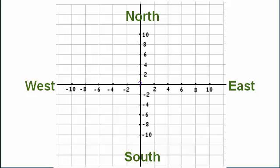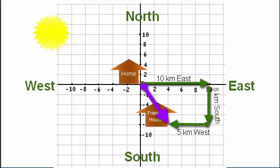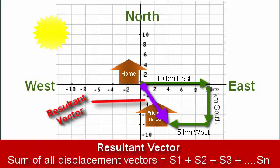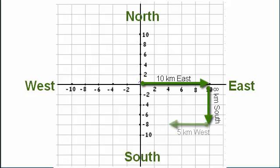What happens when you're dealing with more than two vectors? Let's say we're still taking a drive around our neighborhood, driving 10 kilometers east, 8 kilometers south, but instead of traveling 10 kilometers west, you decide to stop about halfway to visit your friend — so you're driving 5 kilometers west. The distance between your home where you started and your friend's home is what we call the resultant vector. The resultant vector is the sum of all displacement vectors. Whenever you're adding vectors, remember the head-to-tail method: the head of your previous vector is connected to the tail of your next vector, and your resultant vector points from where you started to where you finished.